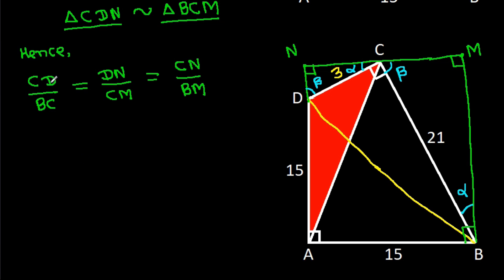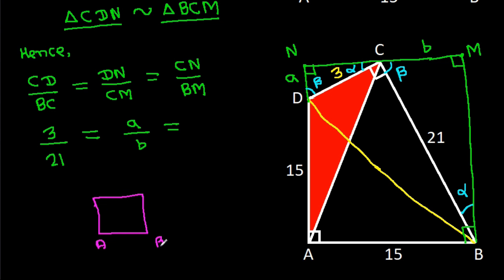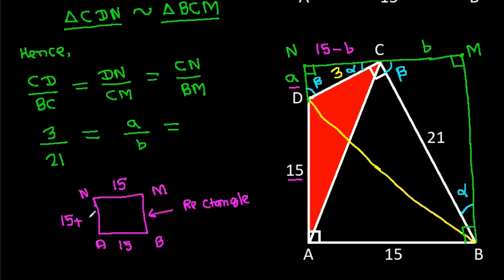Since these two triangles are similar, CD divided by BC equals DN divided by CM equals CN divided by BM. We have CD is 3 and BC is 21. Let DN equal A and CM equal B. Since ABMN is a rectangle, AB is 15, so MN is also 15. MC is B, so CN equals 15 minus B, and AN equals 15 plus A, so BM equals 15 plus A.